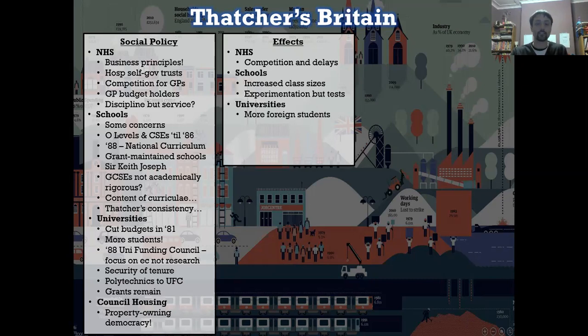Council housing — well, what this did was it doubled spending that councils had to make on mortgage subsidies, helping people who got themselves into trouble and supporting people without work who were paying mortgages on houses. So it actually ended up costing the government more money to sell the houses than they could possibly have gained by selling them in the first place. However, it did increase home ownership by 12%, thus taking us a step closer to that idea of a property-owning democracy that Thatcher was keen on.